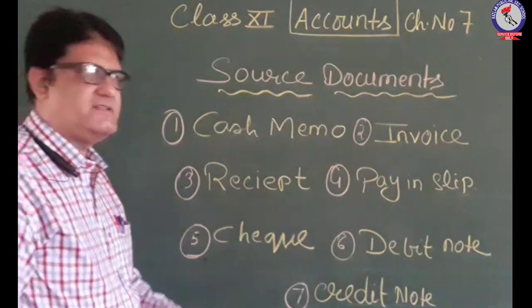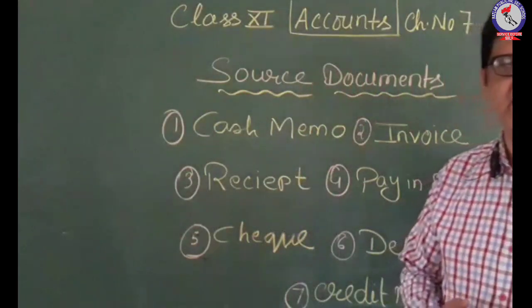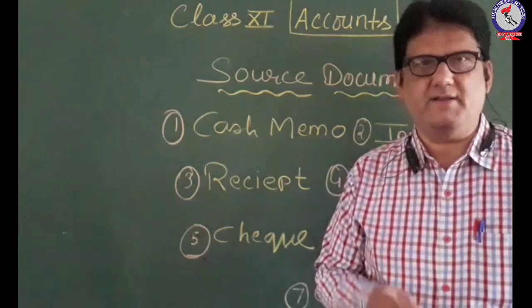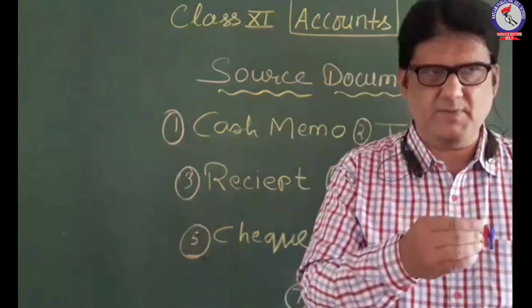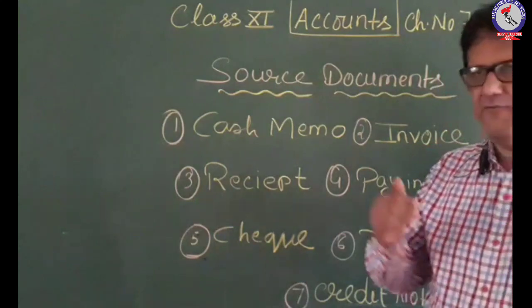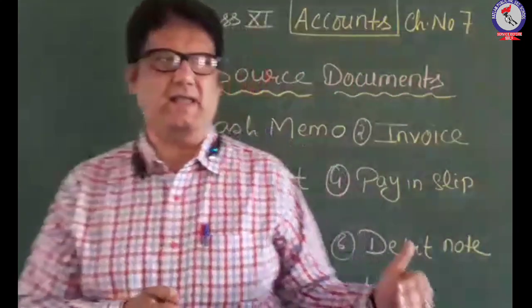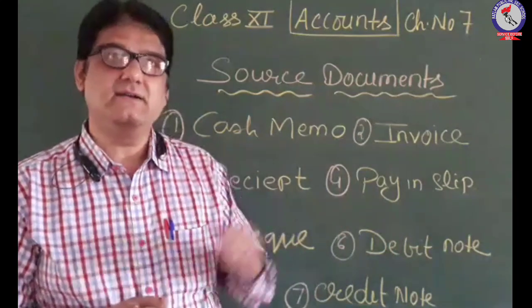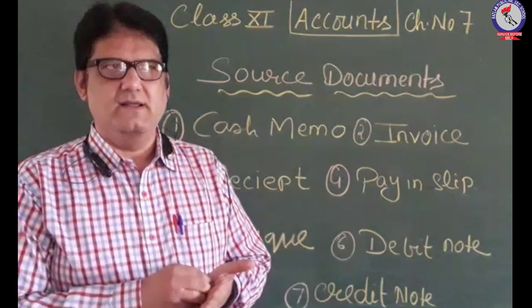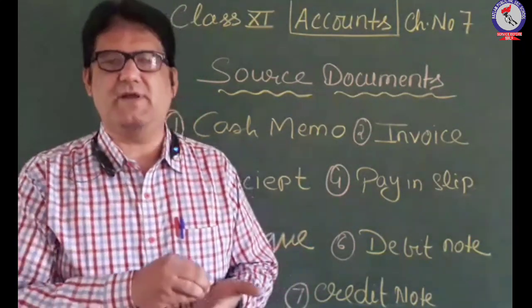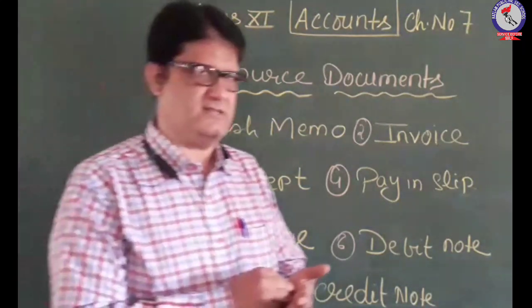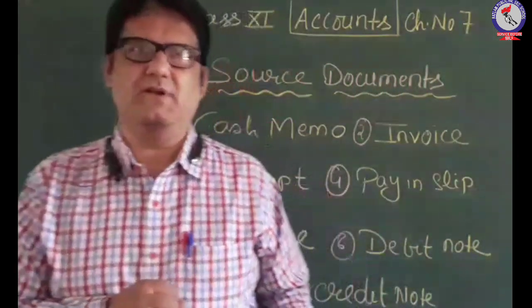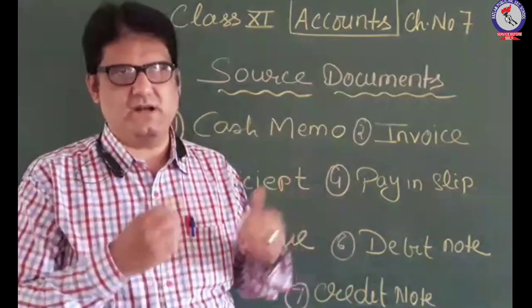Next is receipt. Receipt is another source document prepared when we are receiving money from a customer. It is prepared in duplicate — one original copy is given to the customer and the second copy is kept by the drawer. The receipt mentions the name of the party from whom the amount has been received, how much amount has been received, and the signature of the authorized person accepting the money.